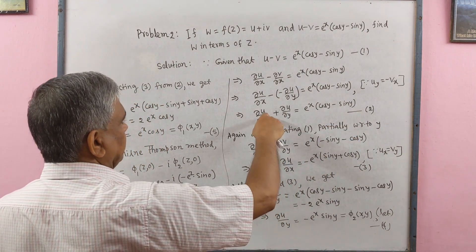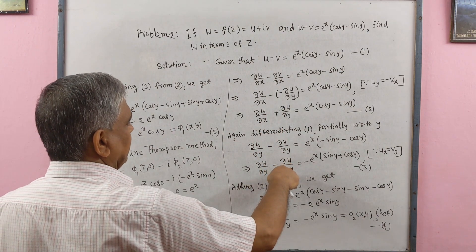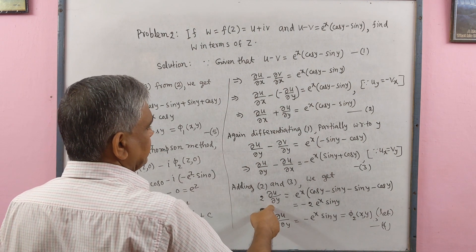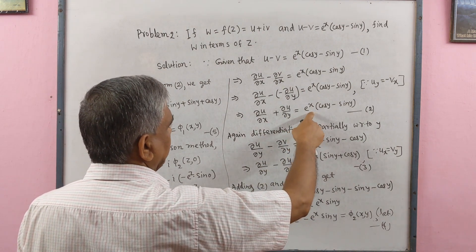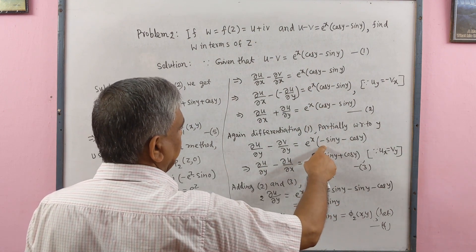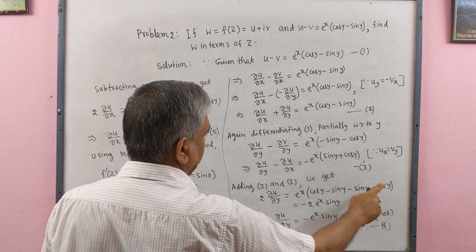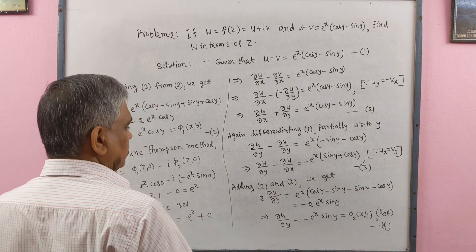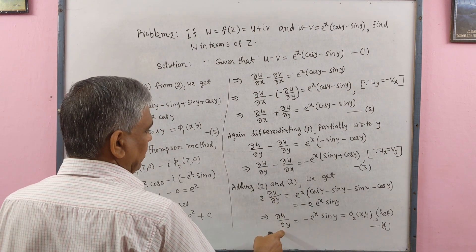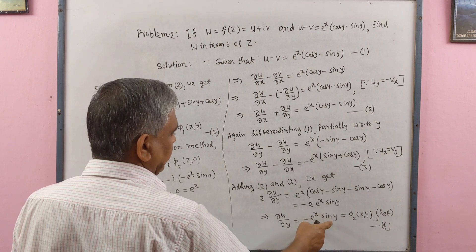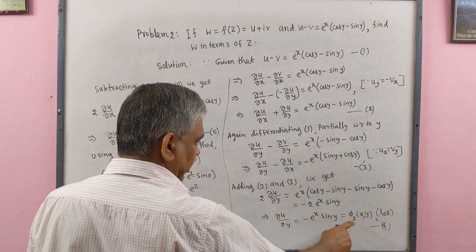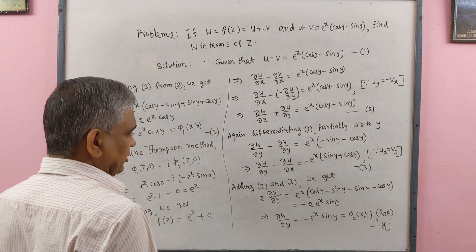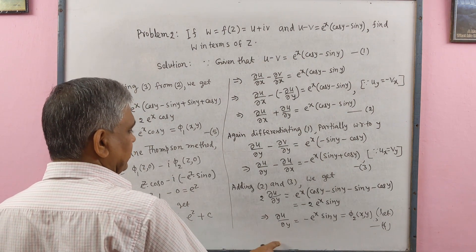Now adding equations 2 and 3: the ∂u/∂x terms cancel, leaving 2·∂u/∂y on the left. On the right, eˣ(cos y − sin y − sin y − cos y) = −2eˣ sin y. Dividing by 2: ∂u/∂y = −eˣ sin y. This is φ₂(x,y).